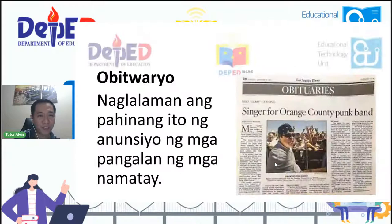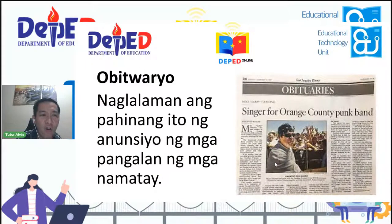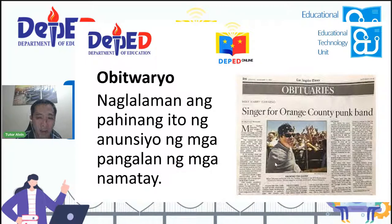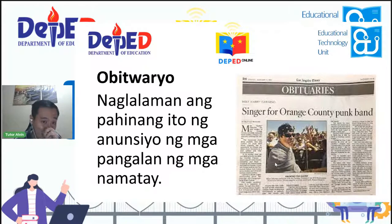Susunod ay obituaryo. Naglalaman ang pahinang ito ng anunsyo ng mga pangalan ng mga namatay o pumanaw na. Dito inilalagay kung saan nakalagay ang kanilang labi, kung saan pwedeng dumalaw ang mga kaibigan at kamag-anak. Dito inilalagay sa obituaryo ang mga impormasyong iyon.